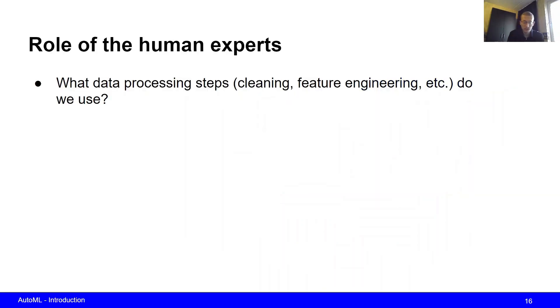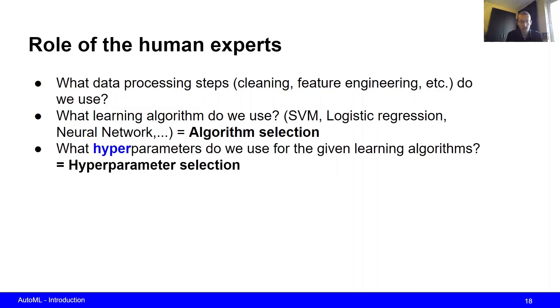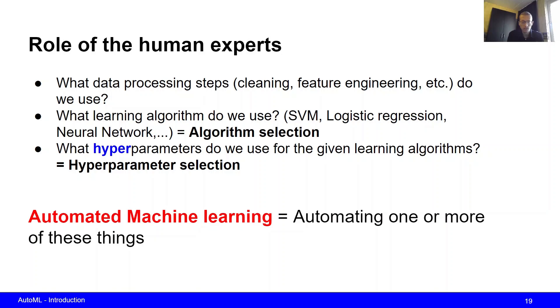As you have seen in the figure before, the human expert has many responsibilities. The human expert has to decide on data processing steps that they want to use, how they want to clean the data, what features they want to extract and feed into the learning algorithm. Moreover, the human also has to select the algorithm that they want to use, for example support vector machine, neural network, or any other learning algorithm. They also have to choose the corresponding hyperparameters of these learning algorithms, and this is what we call hyperparameter selection. Automating one or more of these things is what we call automated machine learning.